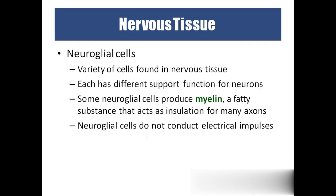Neuroglial cells are the other type of cells that support the neurons. The myelin sheath is formed by Schwann cells, which are supporting cells of neurons. Neuroglial cells cannot conduct electricity — only neurons conduct electrical impulses. The whole nervous system has two types of cells: neurons (conducting cells) and neuroglial cells (supporting cells).